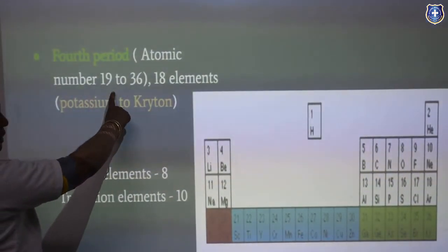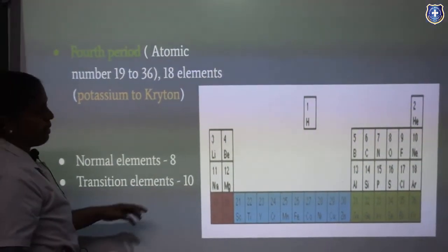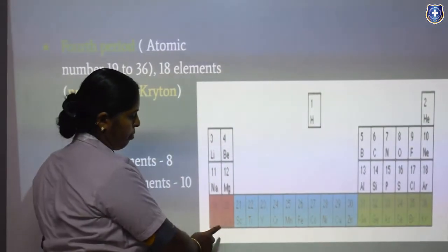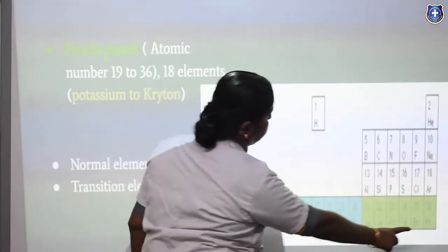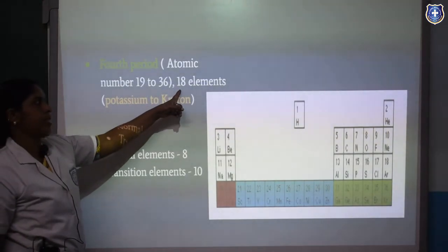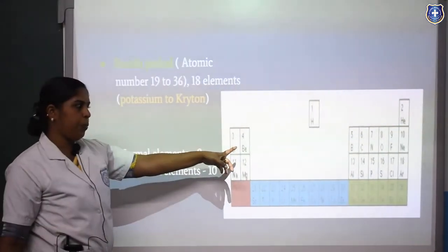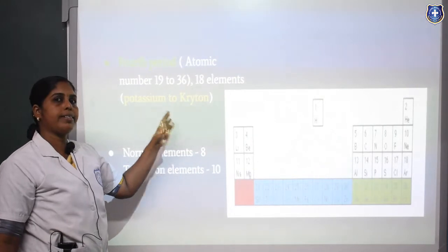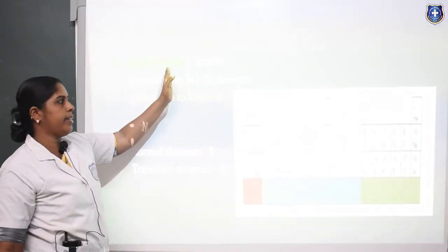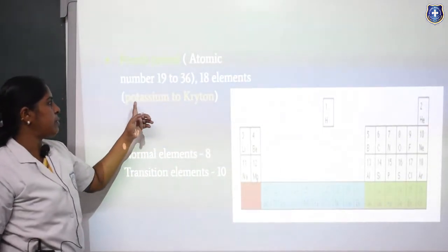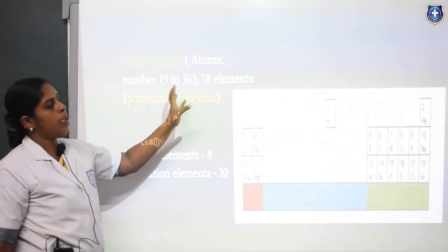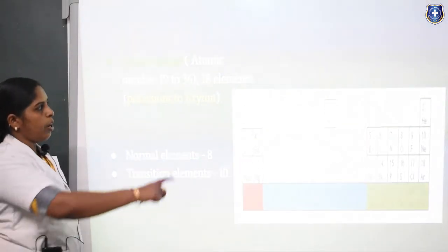Let's see the 4th period — atomic numbers 19 to 36. The elements go from potassium to krypton. Here, 18 elements are present. This is a long period because this 4th period contains 18 elements, from potassium to krypton.